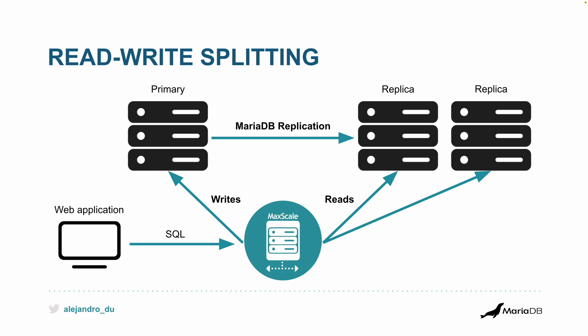You can use the graphical user interface, command line, or REST service to reconfigure MaxScale at runtime — no restart needed. Just define the new replica and you're done. The web application continues to use just one single connection string, one connection object. No need to worry about how many replicas are there or if one disappeared or appeared.